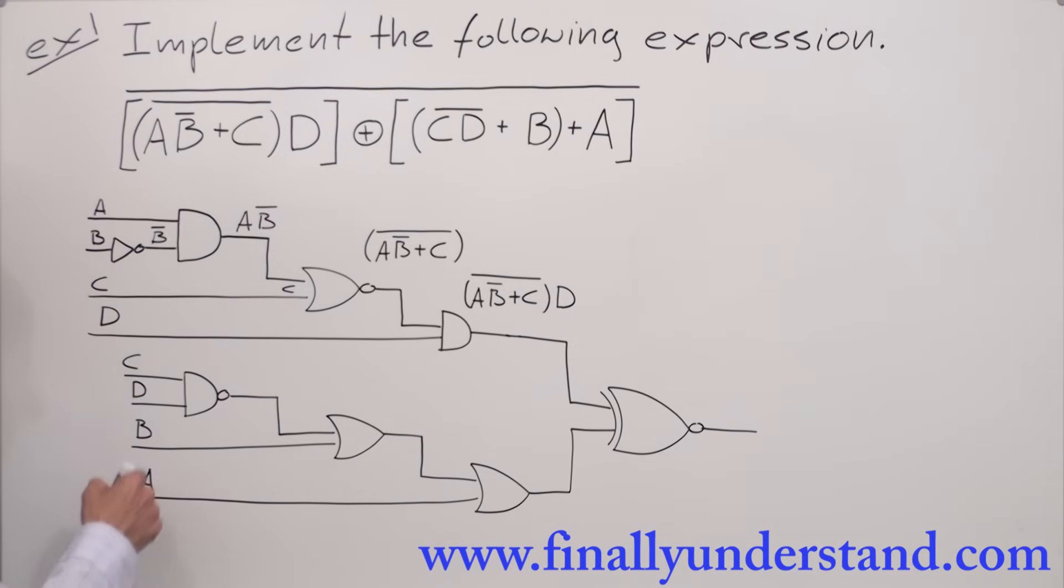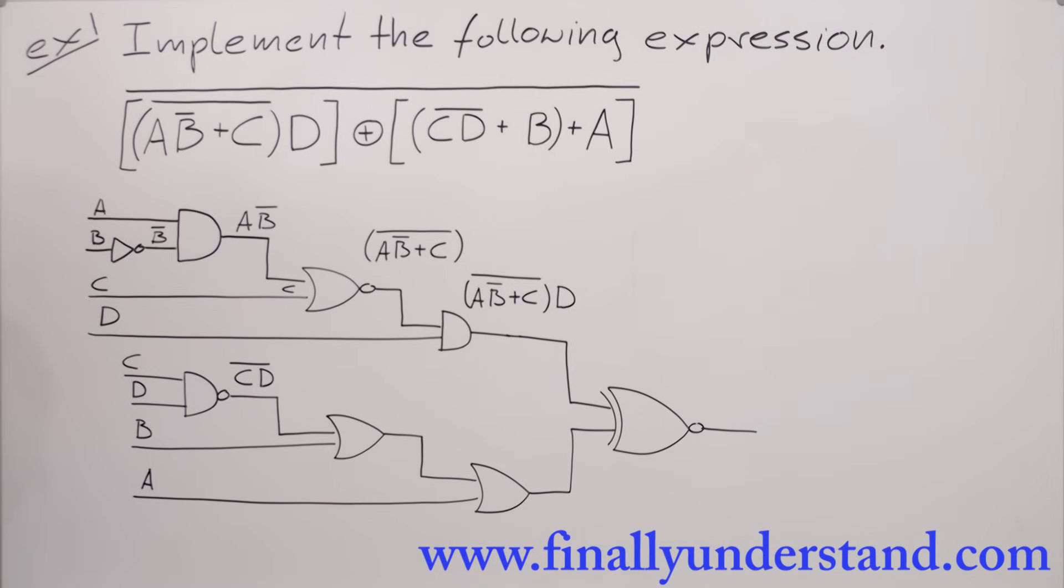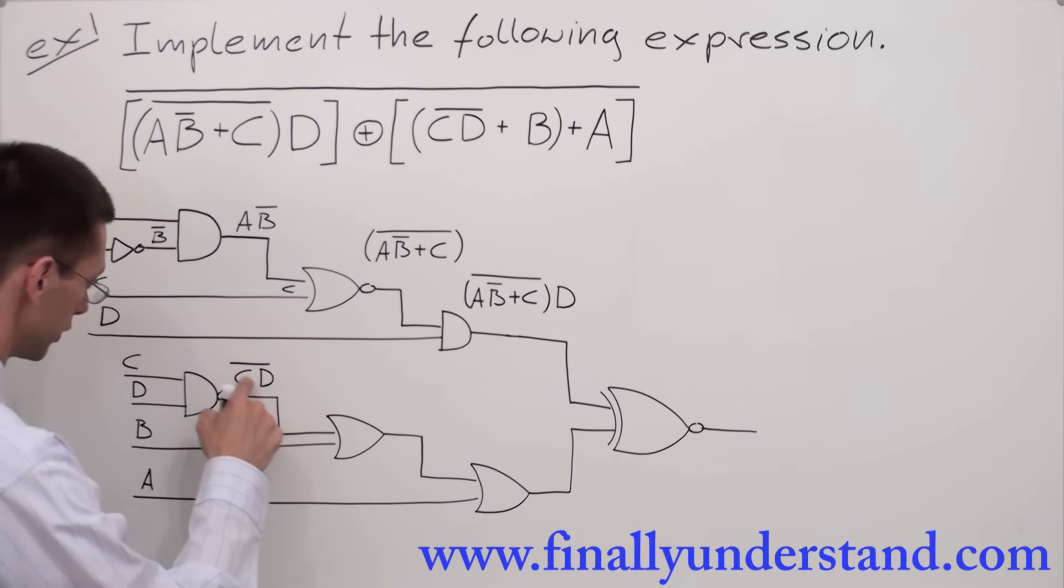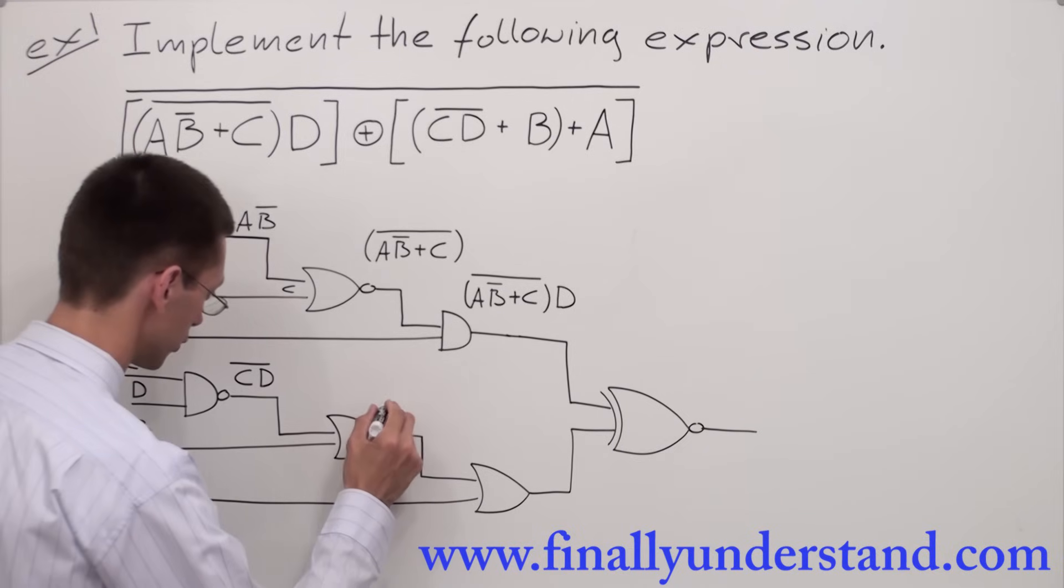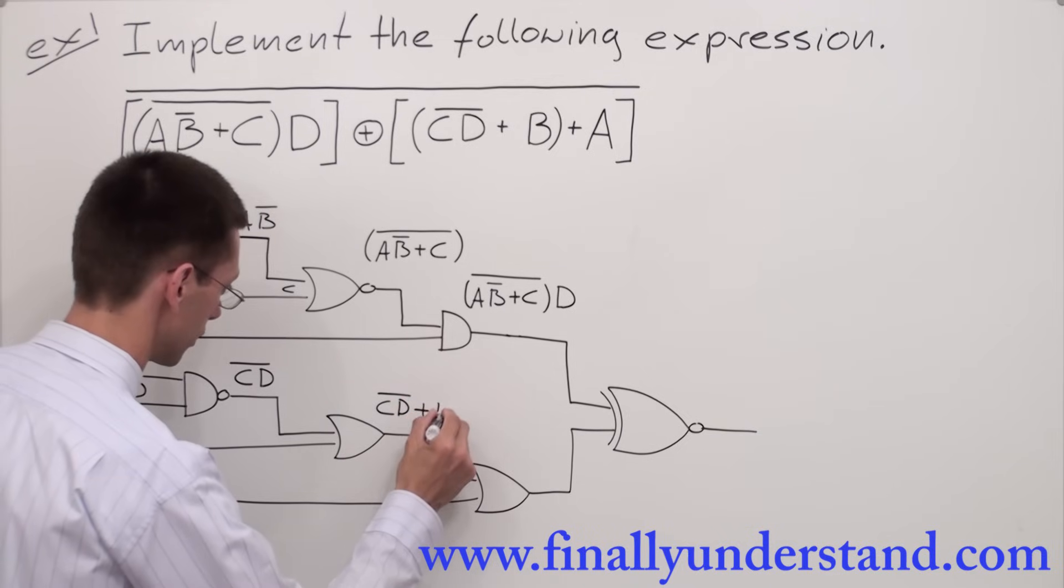Now let's check the second part of the circuit. I have C and D on the inputs of the NAND gate. So on the output I'm going to have C̄D̄. Remember, this is multiplication, but because I have a bubble over here, I'm going to have a bar over these two variables, over the product of these two variables. Next, this expression will go to the OR gate. Another input of the OR gate has B, so it means I have C̄D̄ ORed with B.